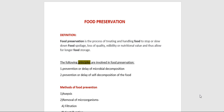Before going into the types or methods of food preservation, let's cover the introduction — what is meant by food preservation and what principles are involved. Food preservation can be defined as a process by which foods are treated to retard, that is slow down, decay or spoilage. Another definition: food preservation is a process of treating and handling food to stop or slow down food spoilage, loss of quality, edibility, or nutritional value, thus allowing for longer food storage.